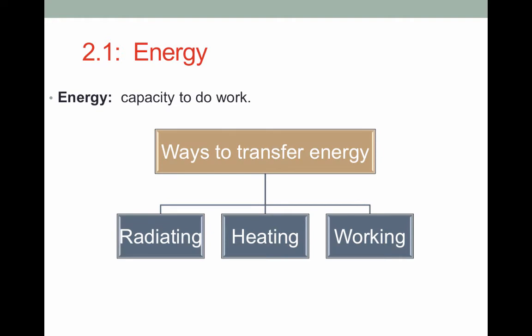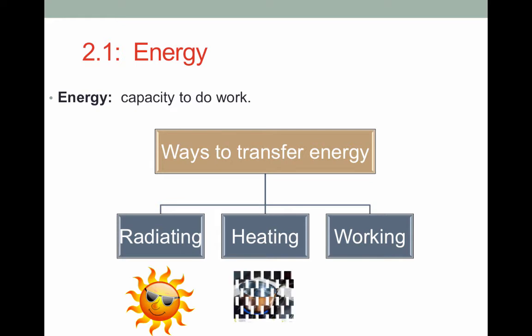Energy can be transferred three different ways. It can radiate as energy radiates from the sun to the earth. Radiation does not require direct contact. Notice the sun is not in direct contact with the earth, but we are still able to feel its energy as it radiates from the sun to the earth. Energy can also be transferred via heating, as in a pot on a hot burner. The energy is transferred from the burner to the pot and then to the water via heating. This does require direct contact, unlike radiation.